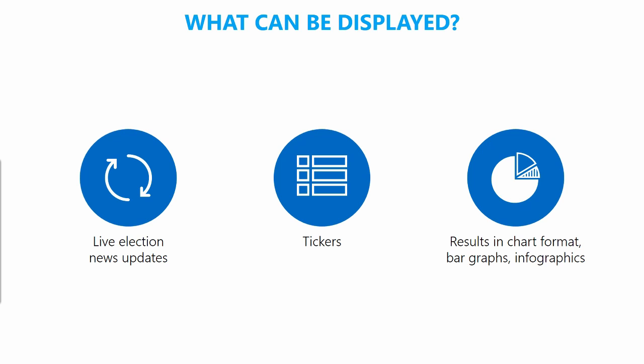So what can you show on a digital signage screen? You can show live election news updates, you can show tickers, and you can show election results in chart formats such as bar graphs or infographics.